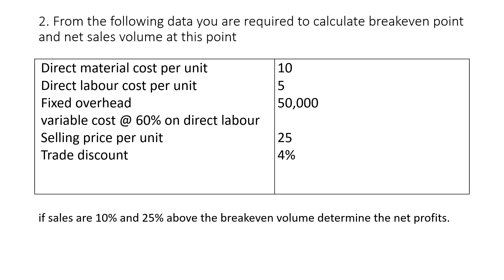See the second problem. From the following data, you are required to calculate break-even point and net sales volume at this point. Direct material cost per unit: 10 rupees. Direct labor cost per unit: 5 rupees. Fixed overhead: 50,000 rupees. Variable overhead: 60% on direct labor, that is 60% of 5 rupees. Selling price per unit: 25 rupees. Trade discount: 4% on selling price. If sales are 10% and 25% above the break-even volume, determine the net profit.